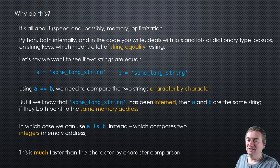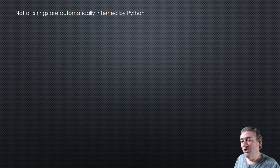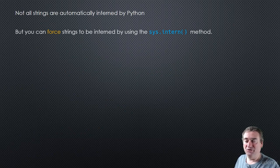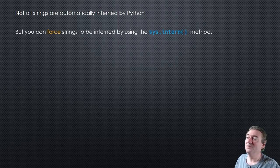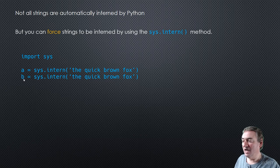We can compare memory addresses — just comparing two integer values for equality — instead of comparing two long strings character by character. This is much faster than doing character-by-character comparison. Not all strings are interned by Python, but you can force strings to be interned using the intern method in the sys module, which makes that particular string a singleton. You'd import sys, then set A equal to sys.intern() with the string you want. When creating B, you also have to use sys.intern(), otherwise it will be a new object in memory.